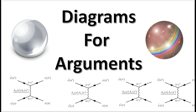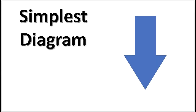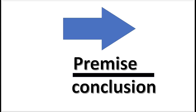We introduce the diagrams for arguments that show how the premise provides support for the conclusion. For the simplest kind of diagram, it consists of a single vertical arrow. This diagram is used in arguments where a single premise implies a conclusion.